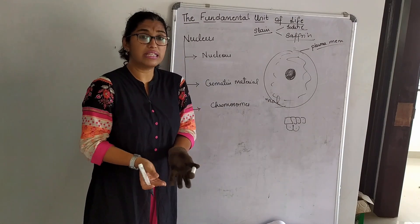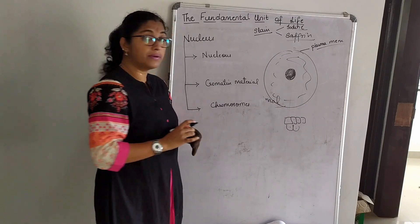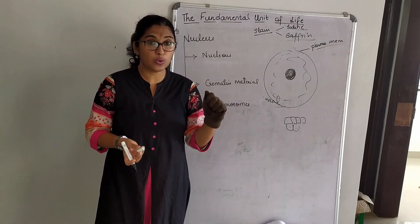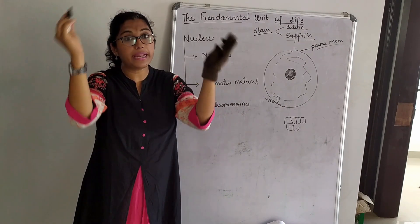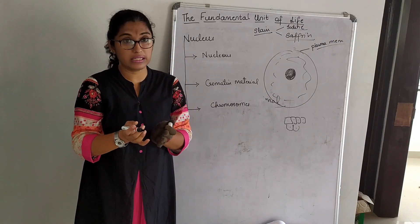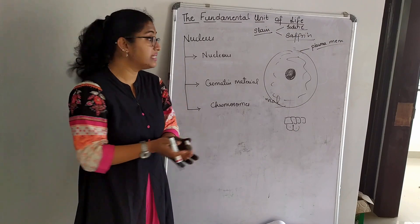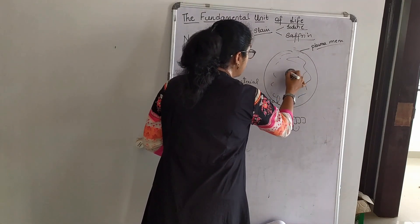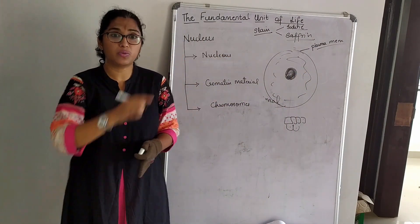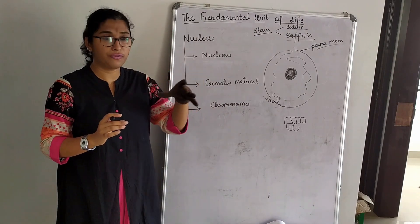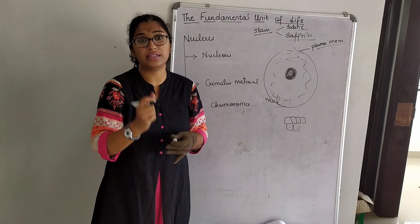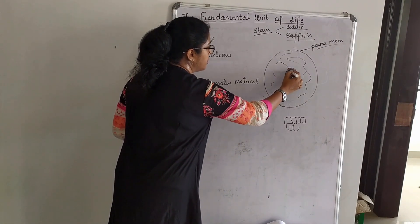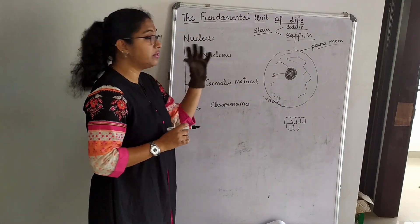Nucleolus is a part of the nucleus. Eukaryotes have a well-defined membrane-bound nucleus, while prokaryotes do not. The nuclear membrane is one surrounding layer. Nucleus is porous in nature, and this porous nature allows materials to move in and out of the nucleus.